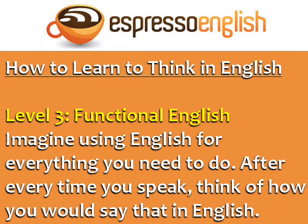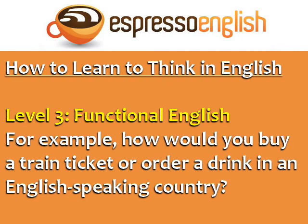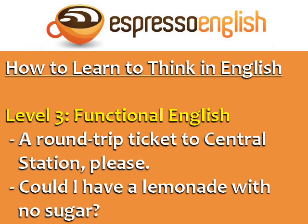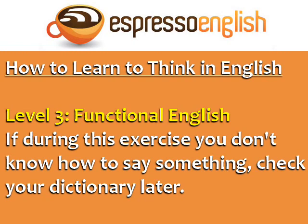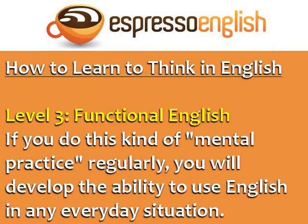Level 3 is functional English. On this level, you imagine having to use English for everything that you need to do. After every time you speak in your native language, think of how you would say that in English. For example, how would you buy a train ticket or order a drink in an English-speaking country? A round-trip ticket to Central Station, please. Could I have a lemonade with no sugar? This helps develop your English for real-life situations, even though you are only thinking and not speaking. If during this exercise you don't know how to say something, check your dictionary later.